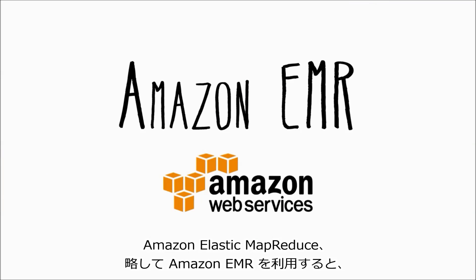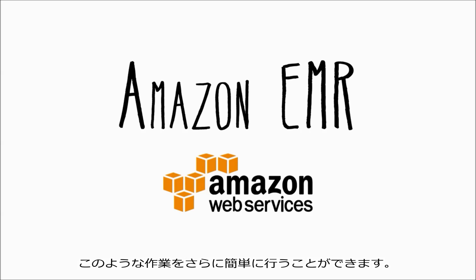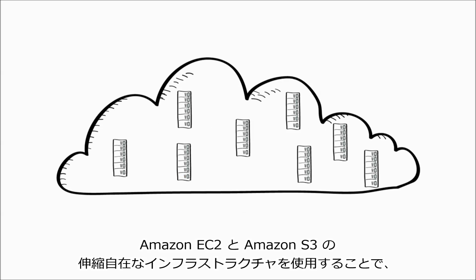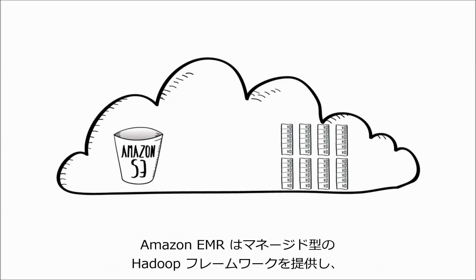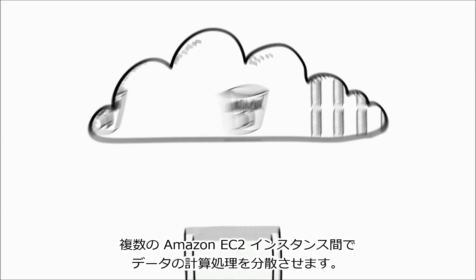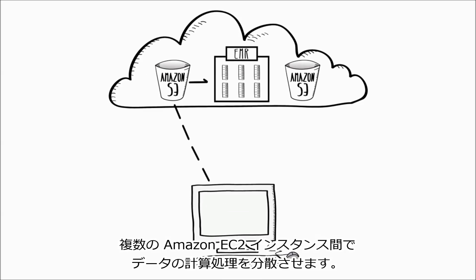Amazon Elastic MapReduce, or Amazon EMR, can make things much easier. Using the elastic infrastructure of Amazon EC2 and Amazon S3, Amazon EMR provides a managed Hadoop framework that distributes computation of your data over multiple Amazon EC2 instances.